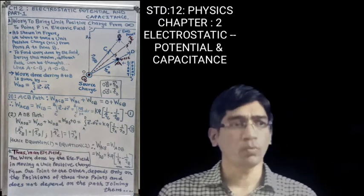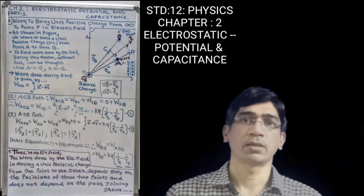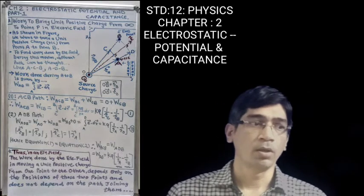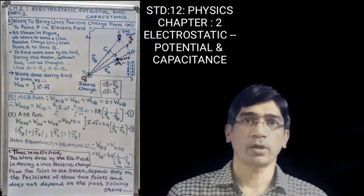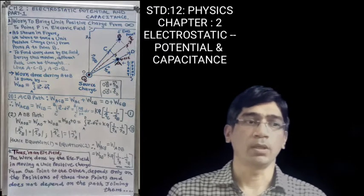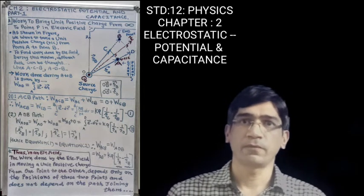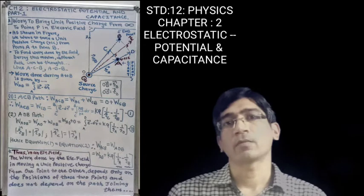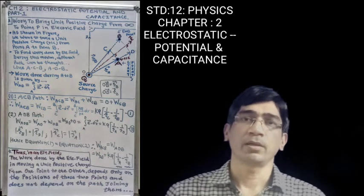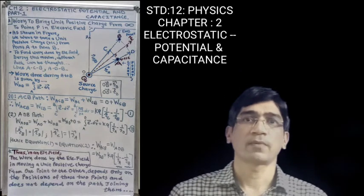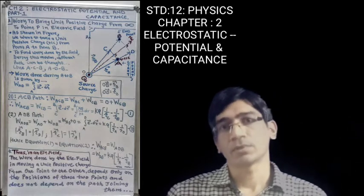The work done during A to B is given by W_AB = ∫(A to B) E·dr. Now, let us take the first path, the ACB path. The total work W_ACB is given by W_AC plus W_CB. Here, W_AC work is E·dr, but in this case, E and dr (small displacement) are perpendicular to each other. That is why E·dr = E·dr·cos90° = 0, so W_AC becomes 0.